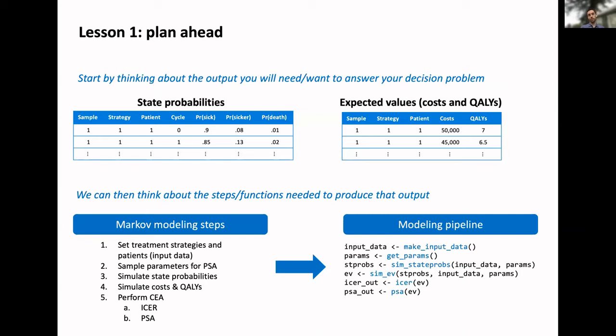We might think about putting that into a modeling pipeline. If I wanted to show it to someone to read the code, what might that look like? This is kind of pseudocode, but you can think of something that's actually pretty human readable as a modeling framework. Creating the input data, getting the parameters we want, simulating our state probabilities, simulating expected values—here I said expected values mainly for space constraints, but you could separate into costs and qualities. Doing our ICER and maybe running a probabilistic sensitivity analysis.